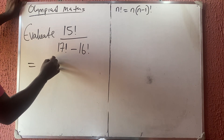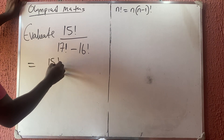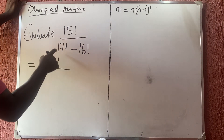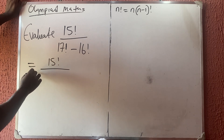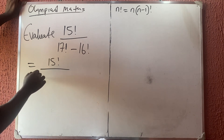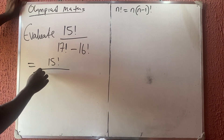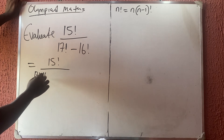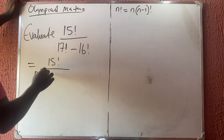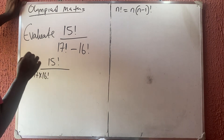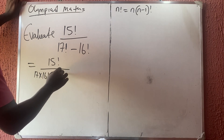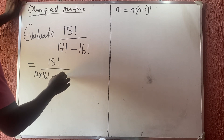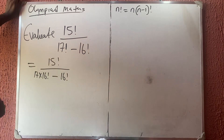This is the same as saying 15 factorial all over — instead of writing 17, I'll write it as 17 times (17 minus 1), which gives you 16, so 17 times 16 factorial — then minus 16 factorial.